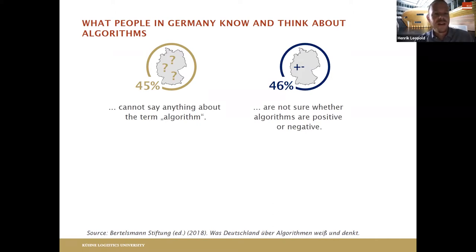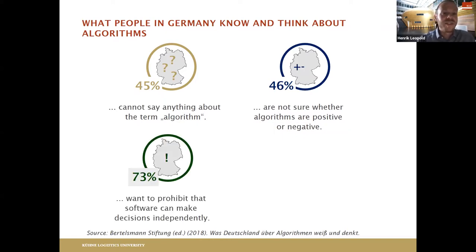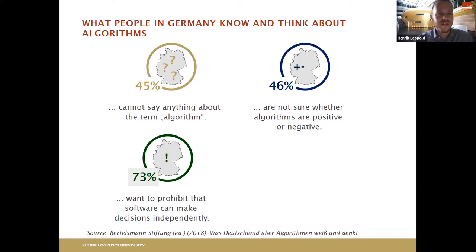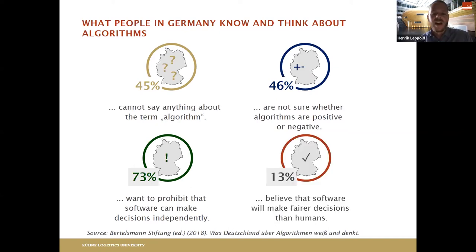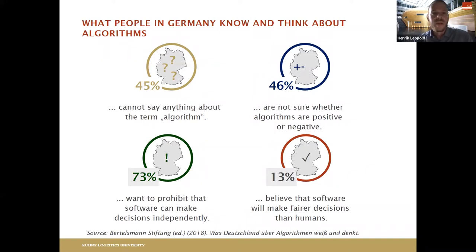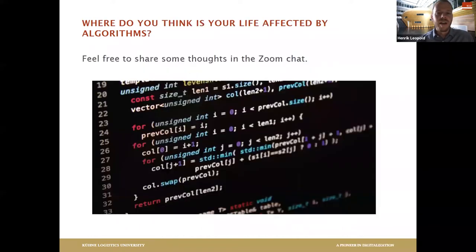46 percent are not sure whether an algorithm is something good or bad. And then — this is a very surprising thing — our life is quite dominated by algorithms, yet 73 percent have a clear opinion that, although they don't really know what an algorithm is or whether it is good or bad, they don't want algorithms to make decisions independently without human intervention. 30 percent still believe software can make better or fairer decisions than humans.